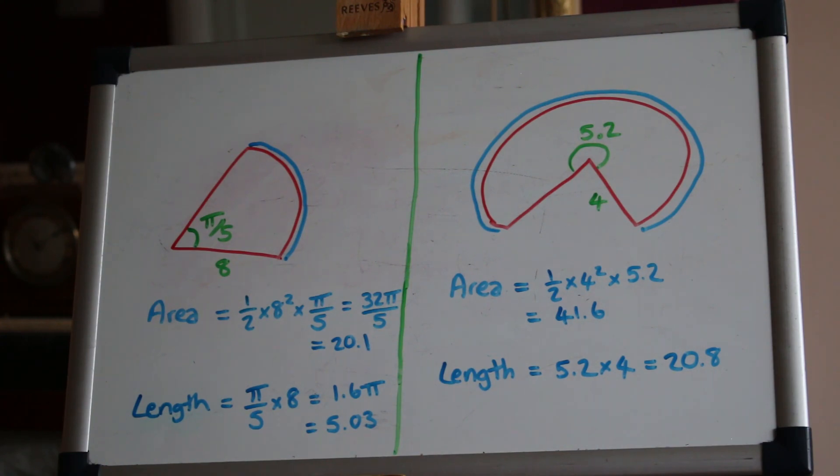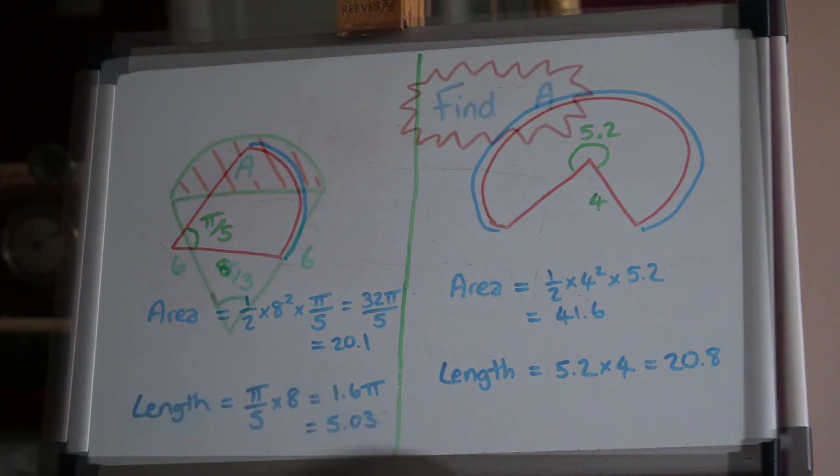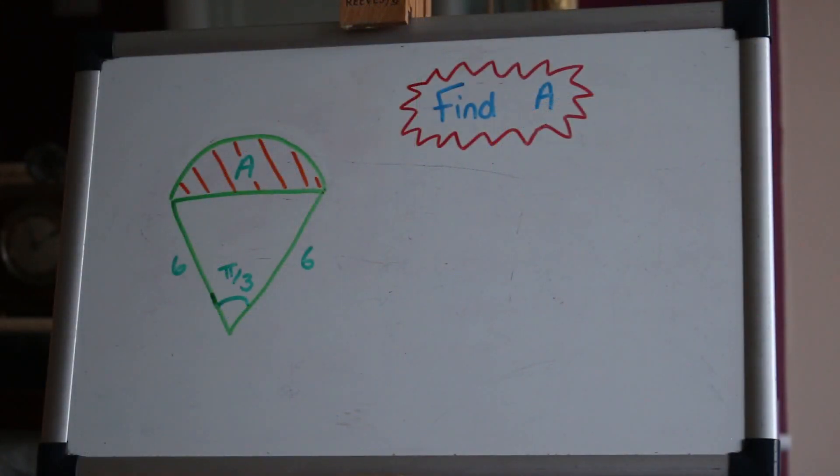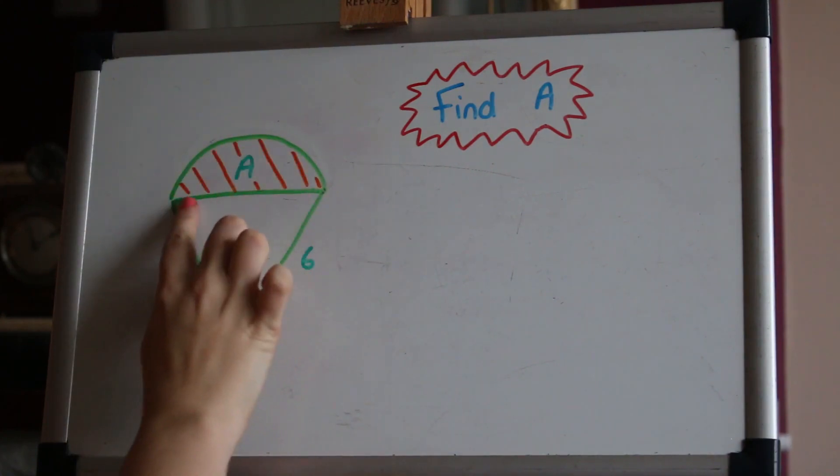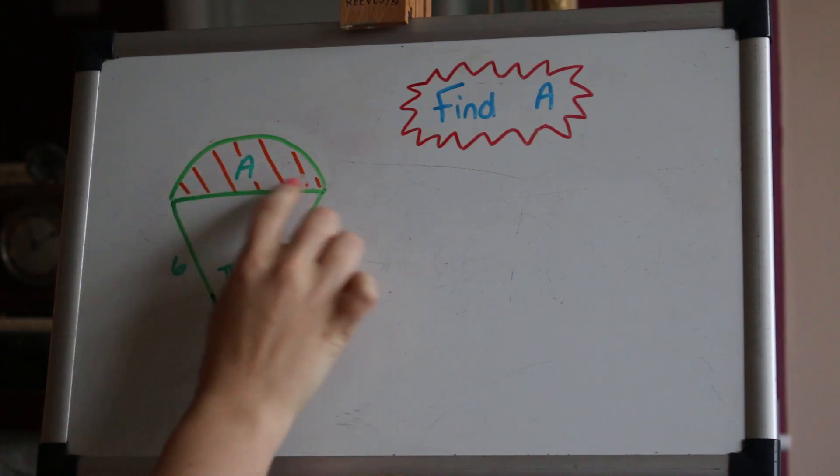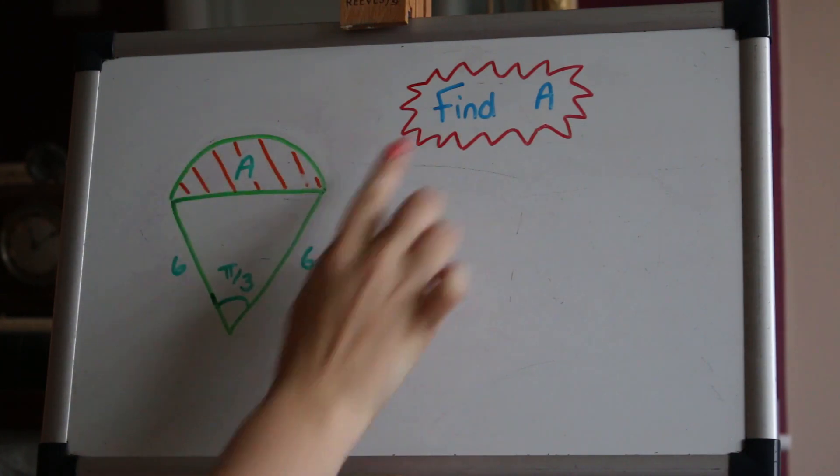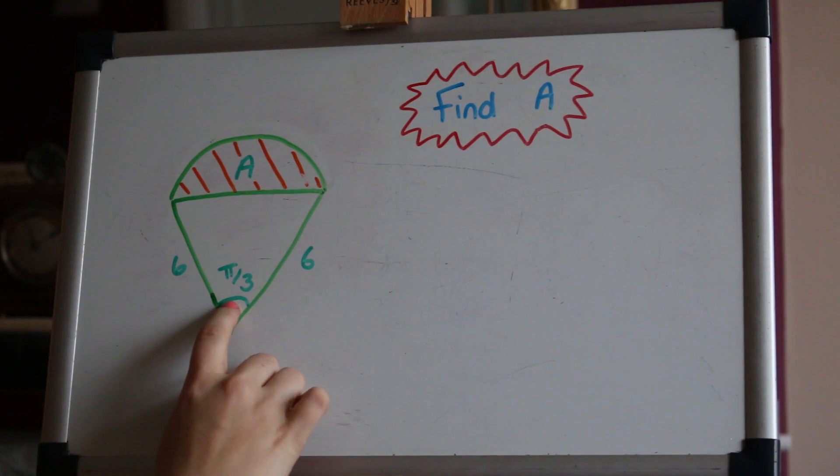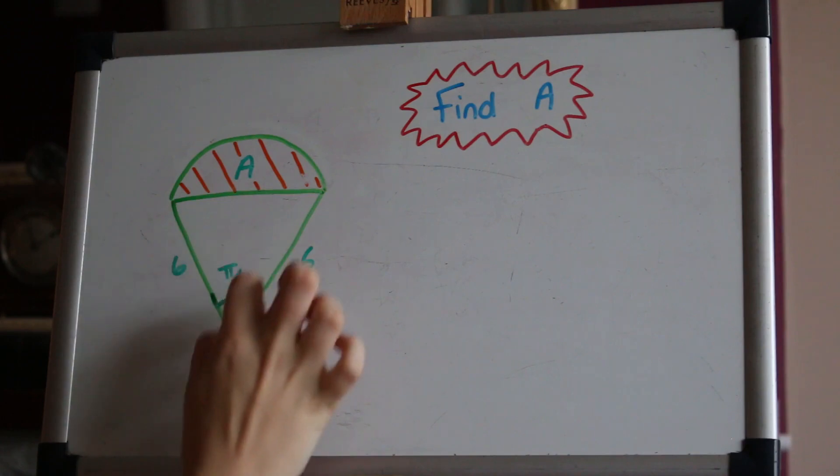Let's take a look now at three exam style questions. This question comes up quite a lot in various different guises. You're given a sector with a line cut across to cut it into a triangle and asked to find this little area here, the area a. The angle here is a third π and the radius of the sector is six. And we're basically going to go about this by finding the area of the whole sector and taking off the area of the triangle.